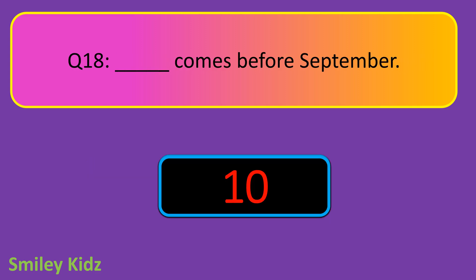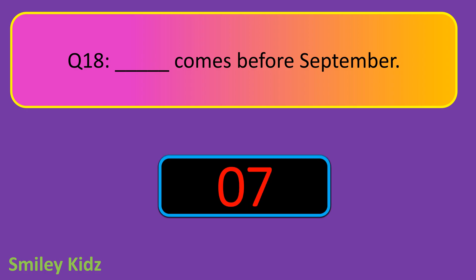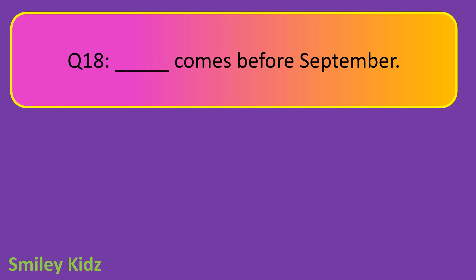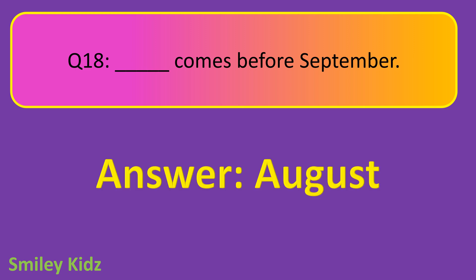Question number 18. Dash comes before September. Your time starts now. And your time is up. The right answer is August. August comes before September.